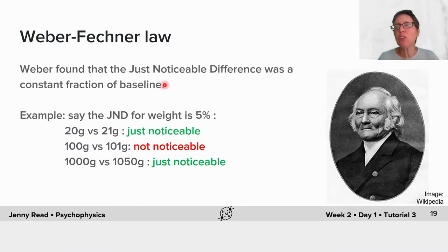Weber found that in all sorts of domains, whether it was vision or sound or weight perception, the just noticeable difference was a constant fraction of the baseline. For example, the JND for weight isn't a fixed number of grams. It's, let's say, 5%. So suppose you can just about notice a 1 gram increment from 20 to 21 grams.